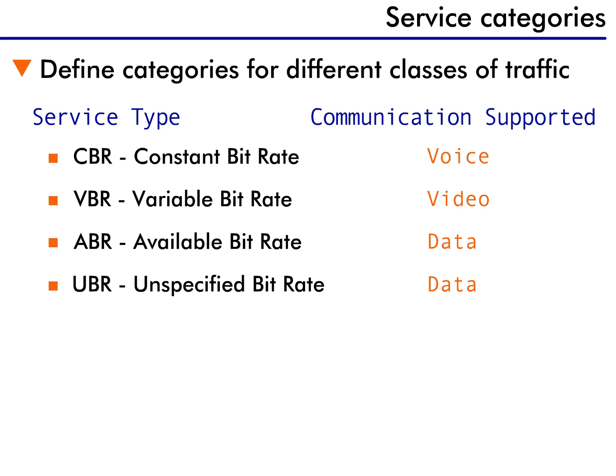And finally, with essentially no priority, is unspecified bitrate, or UBR. UBR traffic has no guarantees, so all other traffic takes priority. If the network gets congested, UBR traffic gets discarded first and the originating station is required to resend it.